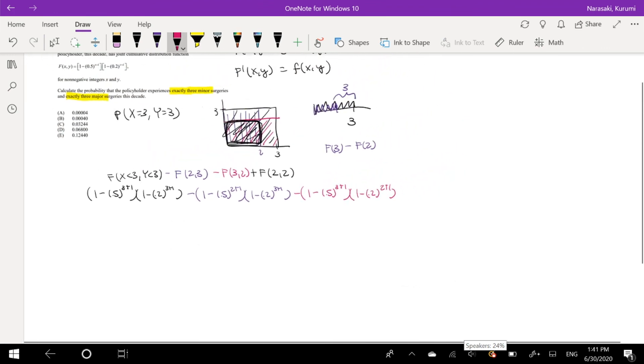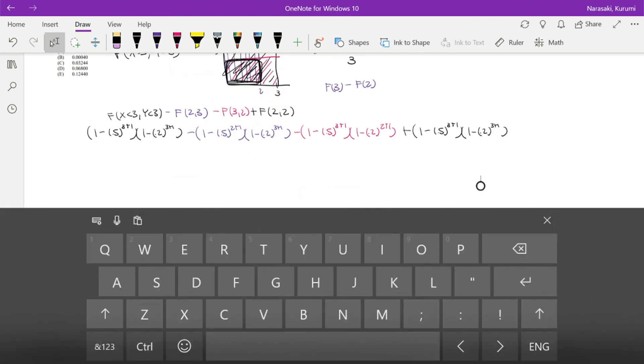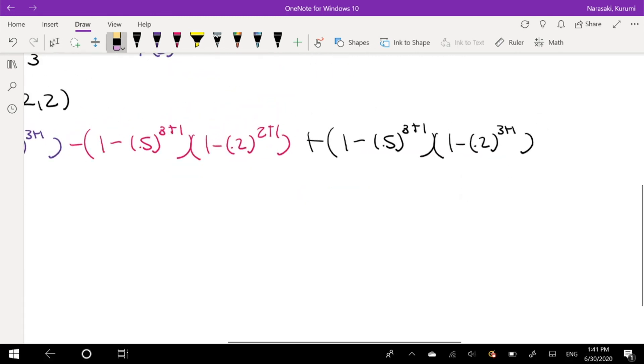And lastly, lastly, plus adding that (2,2) back in because we don't want to double count it. So adding that 2 back in, that's going to be 2 plus 1, 2 plus 1. Alright, right?